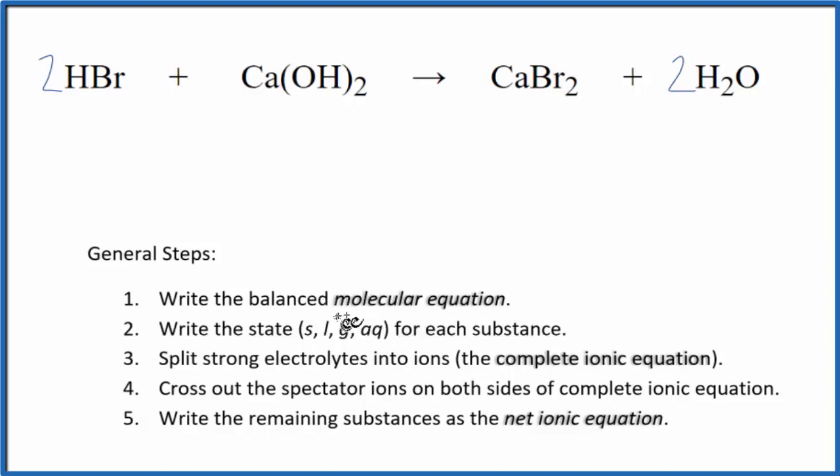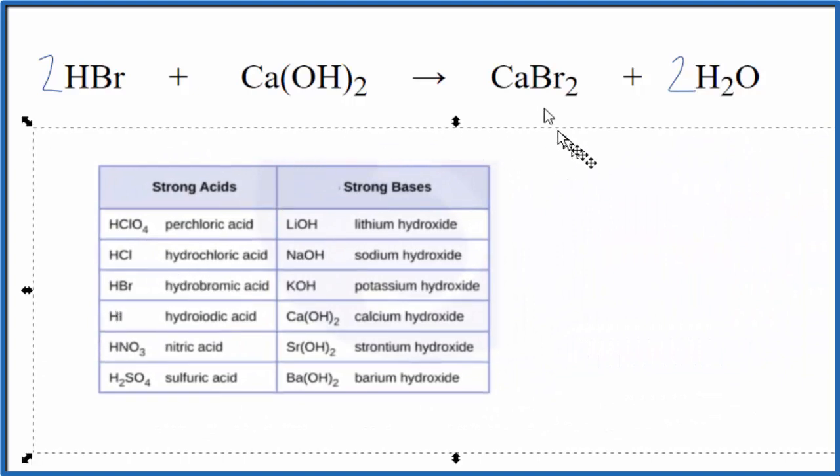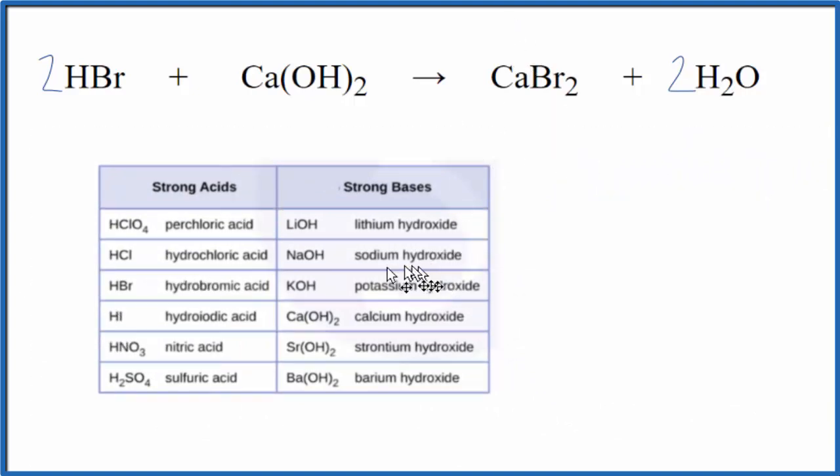Next, we need to write the state for each substance. If we look at this chart here of common strong acids and bases, this will help us. Here is HBr, hydrobromic acid. That's a strong acid. It's going to dissociate completely into its ions, so we put an AQ after it.